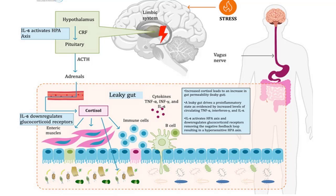Interleukin-6 is also known to activate the HPA axis. As a result of gut-brain axis impairment due to stress, reduction in hippocampal serotonin and brain-derived neurotrophic factor expression is seen, which leads to many neurodegenerative conditions.